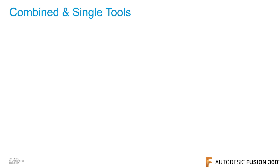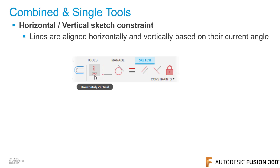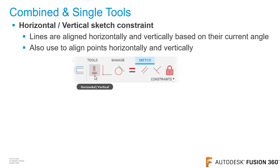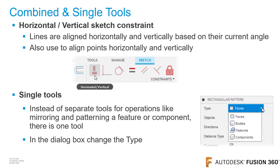Inside Fusion 360, some tools are combined. For example, the horizontal and vertical sketch constraints are combined — lines are aligned horizontally or vertically based on their current angle. A line at 10 degrees would change to horizontal; a line at 80 degrees would become vertical. You can also use this constraint to align points. Fusion 360 also uses single tools, meaning instead of separate tools for mirroring or patterning a feature or component, there is one tool, and you change the type in the dialog box.